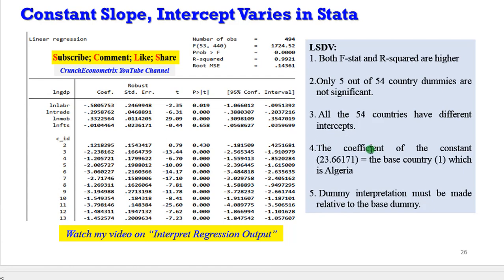Like I mentioned before, only five out of the 54 country dummies are not significant. All the 54 countries have different intercepts. I said it before that the coefficient of the constant is that of the base country Algeria. If you want to give your dummy interpretation, it must be made relative to that of the base domain. By way of emphasis, watch my video on how to interpret regression outputs for you to know more.